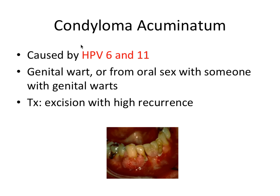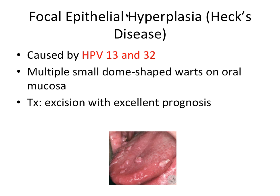Condyloma acuminatum is caused specifically by HPV 6 and 11 — those are numbers to memorize. It can present as a genital wart, or it can spread to the mouth through oral sex with someone who has genital warts. Treatment is excision, and note that it has a high recurrence rate.